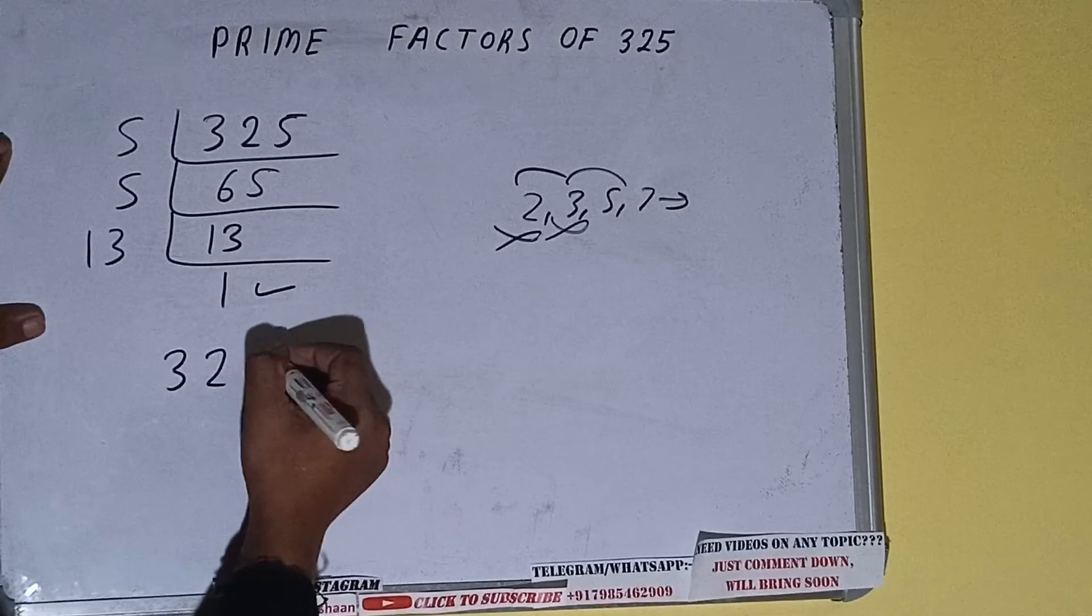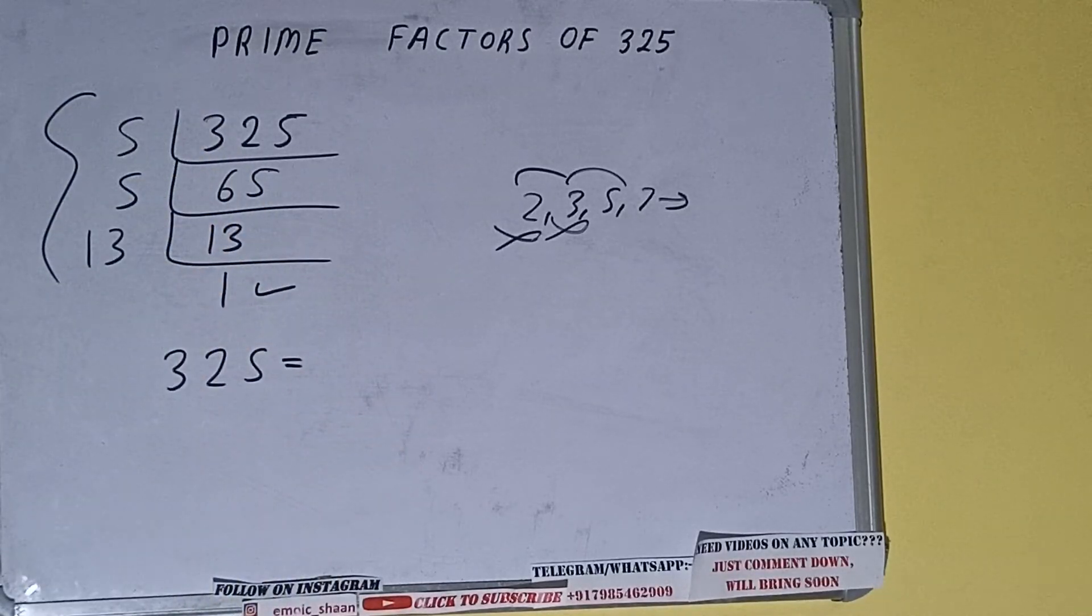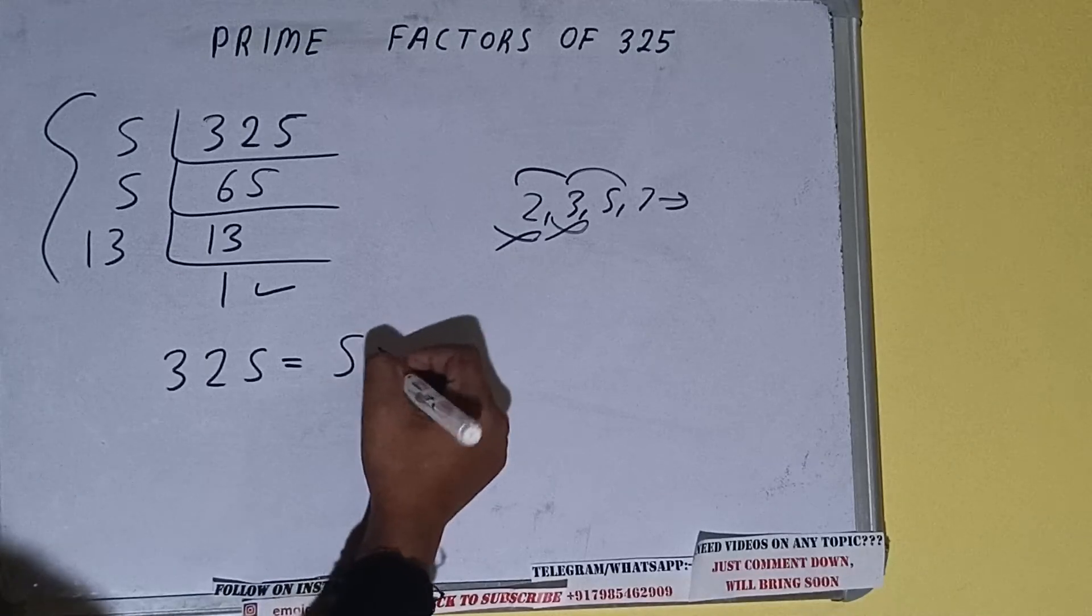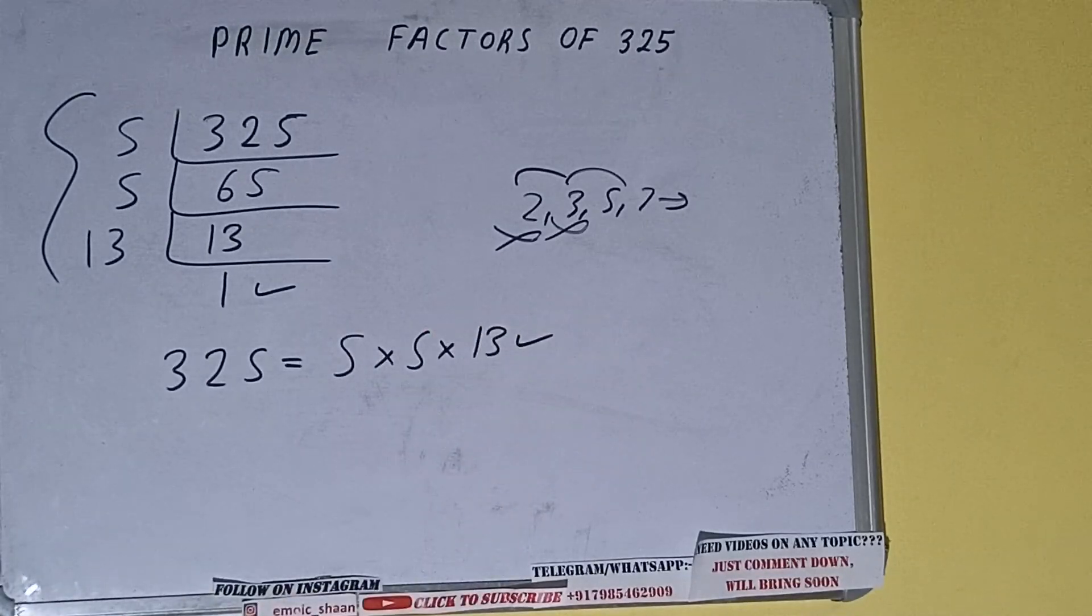That is, prime factors of 325 equals multiply whatever we have on the left-hand side: that is 5 × 5 × 13. That will be the answer. So this is all about prime factors of 325.